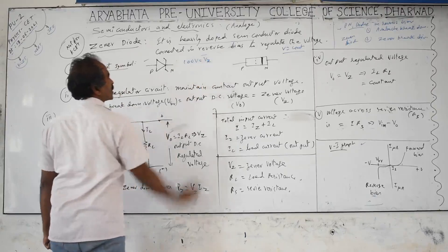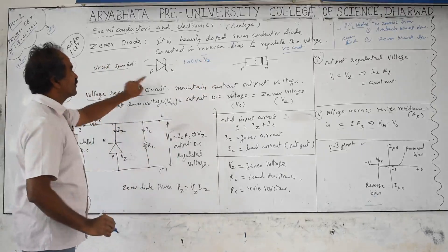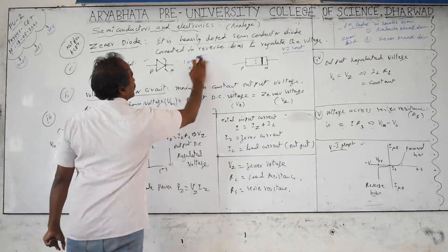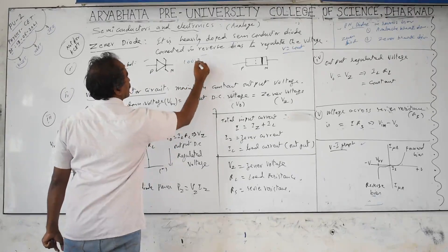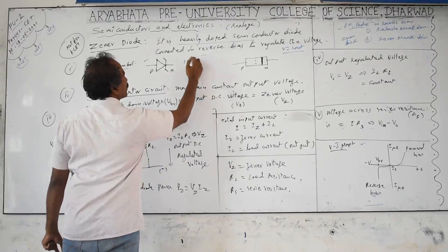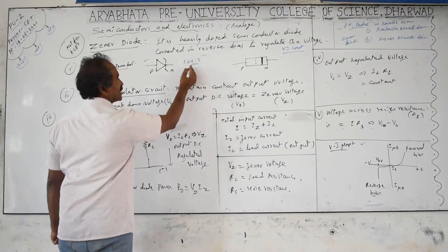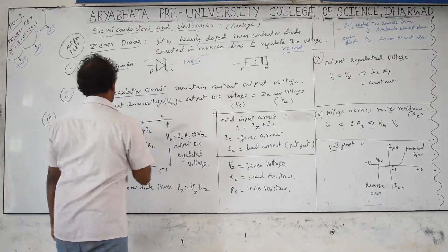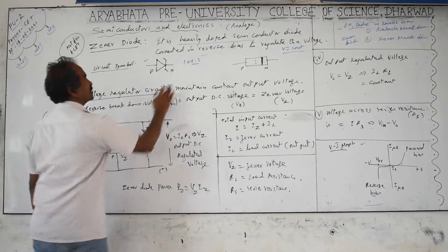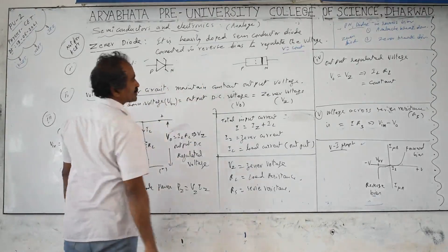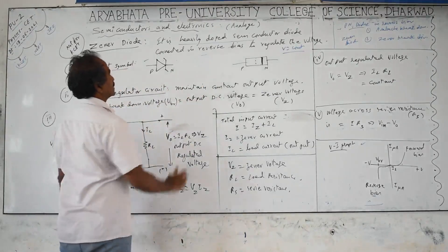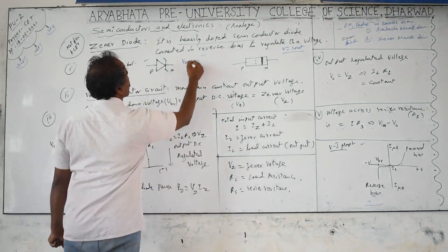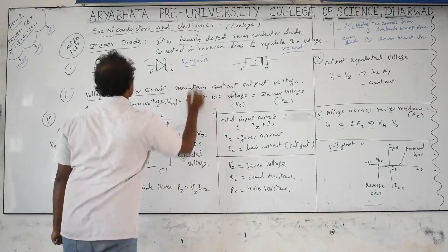If you want to keep the output voltage constant at 100 volts, then Vz should equal 100 volts. Practically there will be a small additional voltage drop across the diode (e.g., 100.1 or 101 volts input), but in theoretical problems we don't consider that. So for voltage regulation: Vz equals the desired constant voltage.